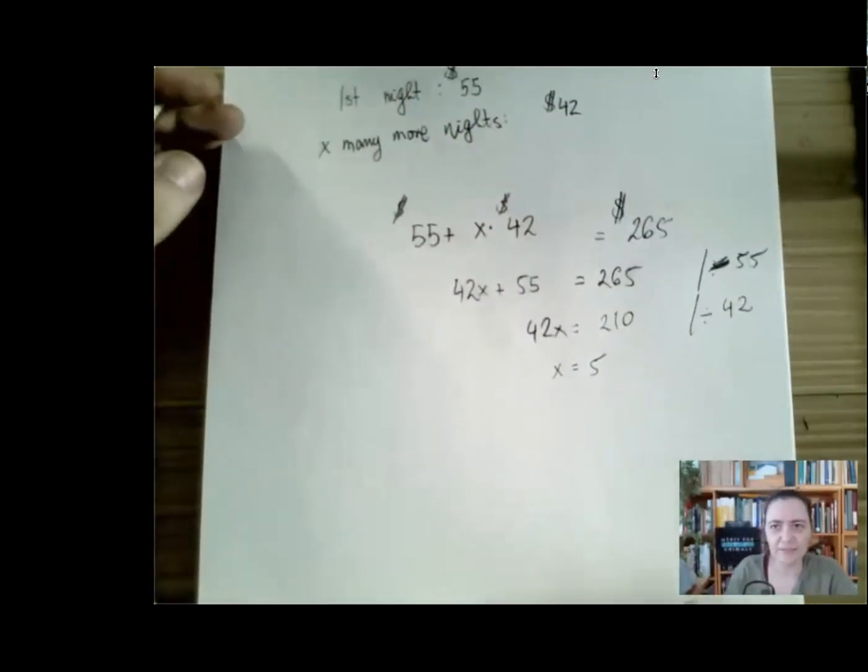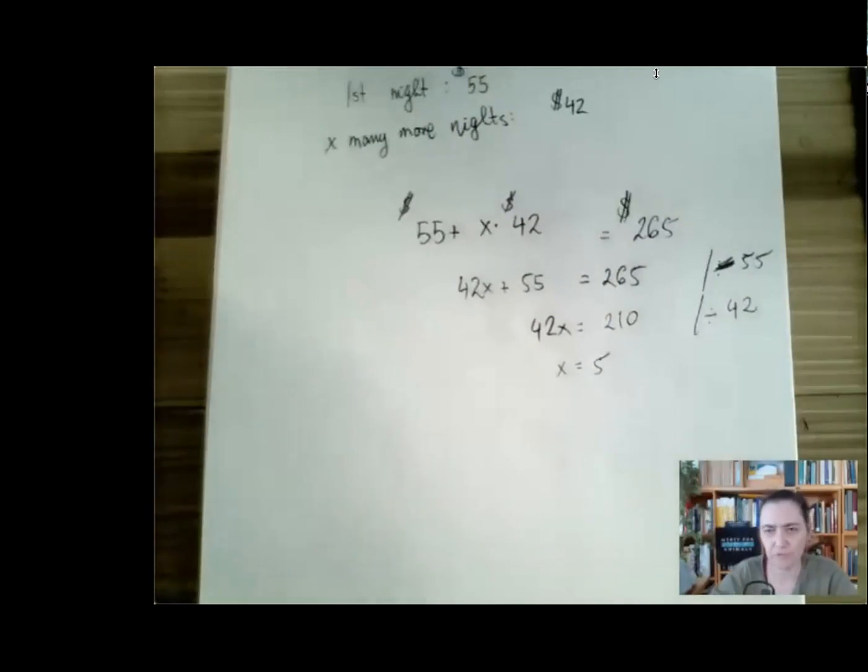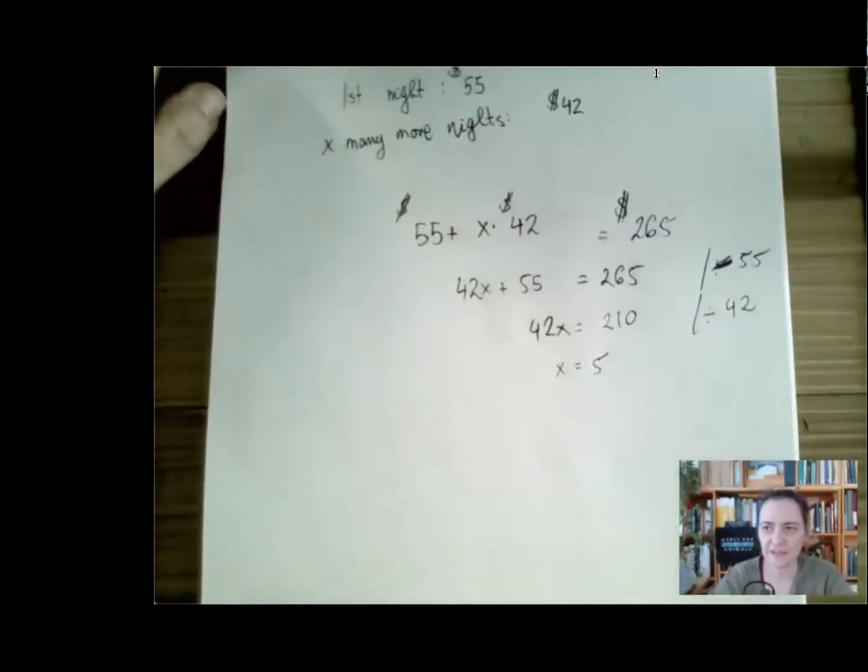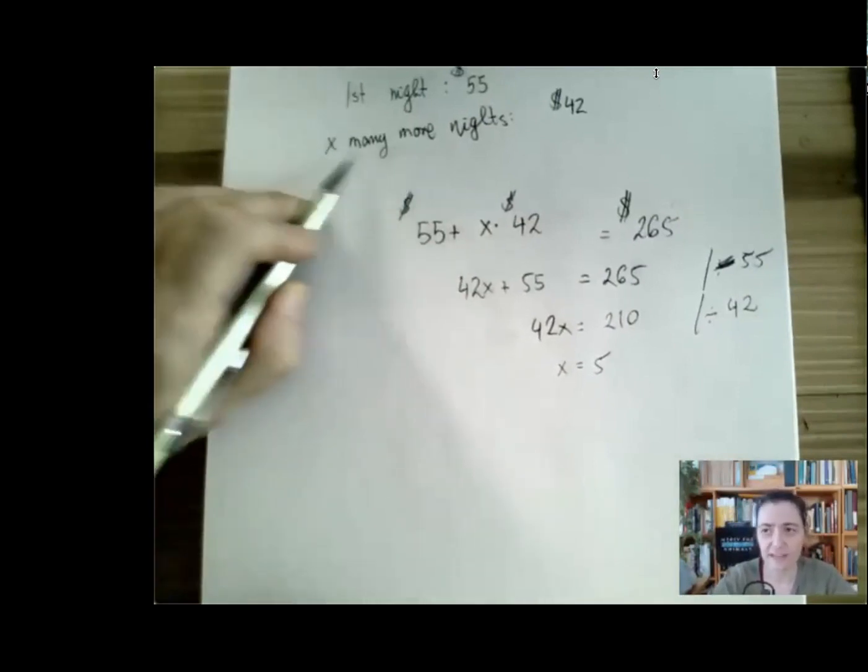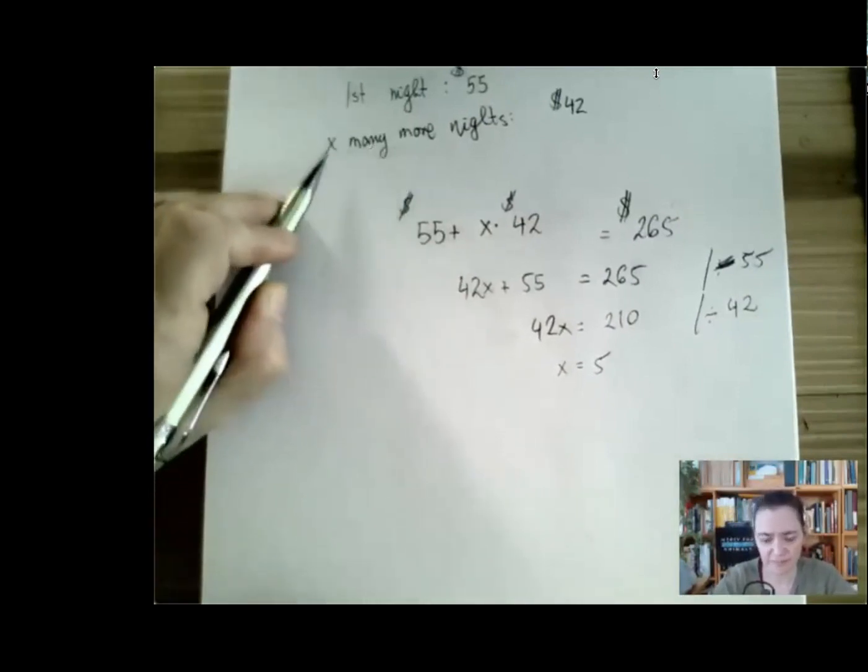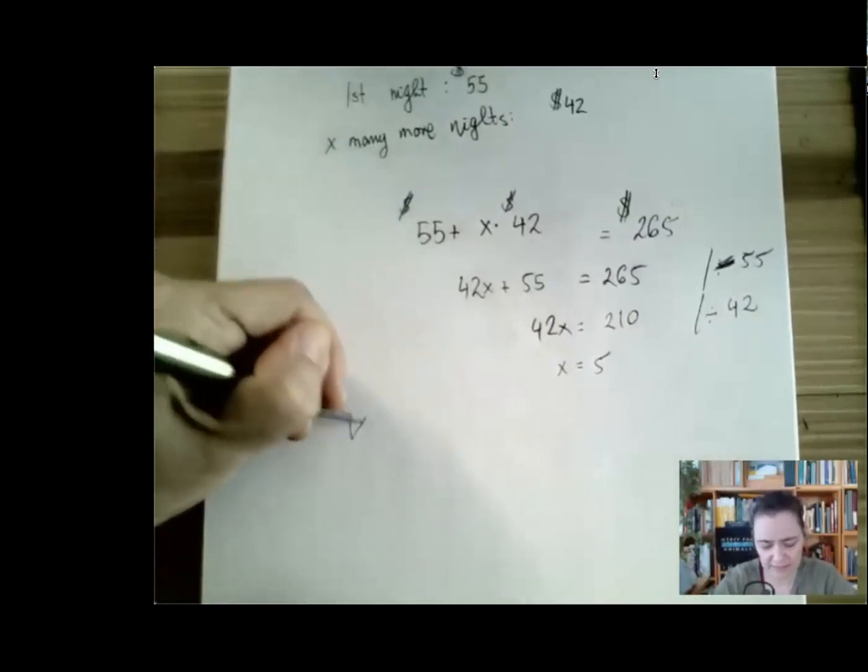And then a typical error that I would make would be that I would say, oh yeah, we stayed five nights, but that's incorrect. X many more nights means five more, right? Because that was the first night. So we stayed six nights.